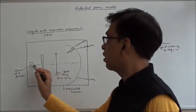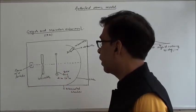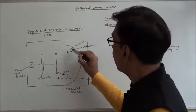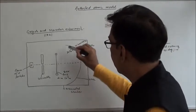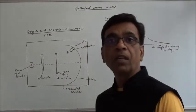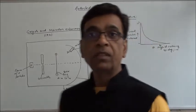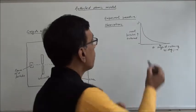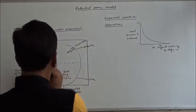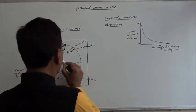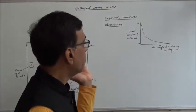The experiment: alpha particles were allowed to fall on the gold foil after being collimated into a fine beam by the collimators, and the scattered particles were studied using the detector. The detector can be moved on a circular scale, and it was studied how many particles are coming at any one particular angle. The scattering angle is the angle between the incident direction and the direction in which the particle has moved after passing through the foil.